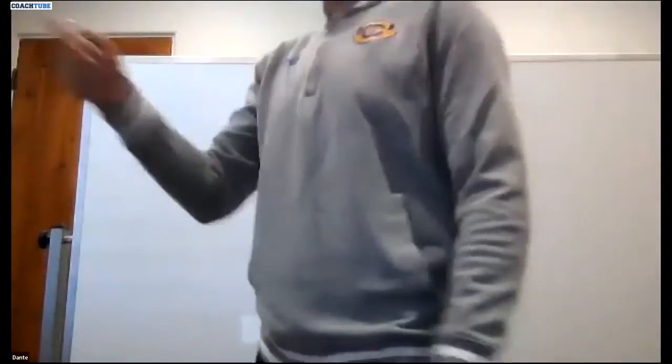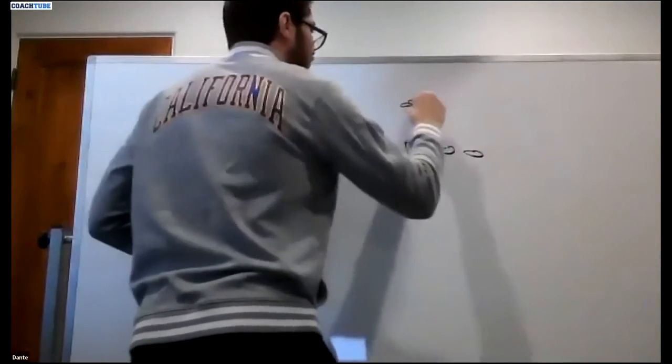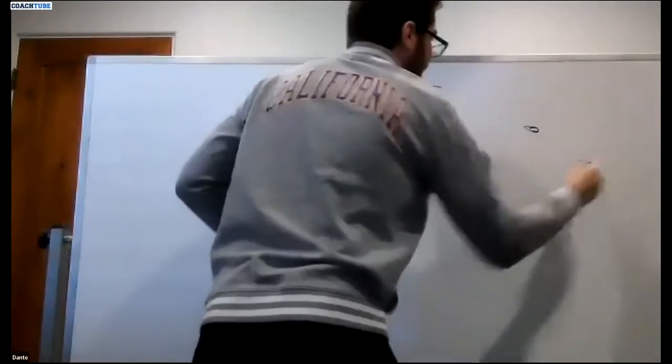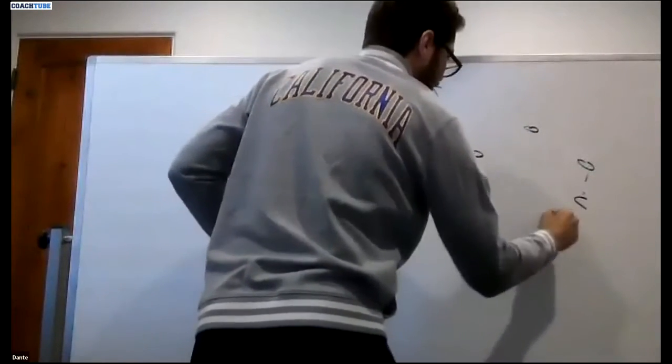So if I'm a bracket strong safety and three is fast, draw this on the board real quick. Three is fast, corner's in mag, three safety's here, strong safety's here.